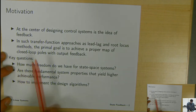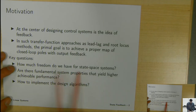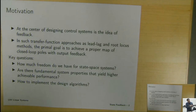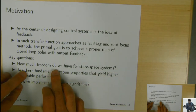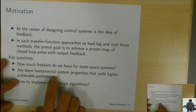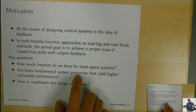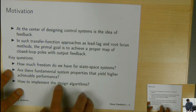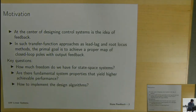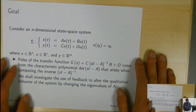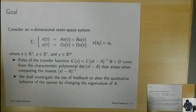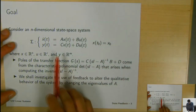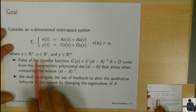For state-space systems, some key questions we want to ask are: how much freedom do we have? If we are given a choice of different controls to design, what kind of freedom do we have in terms of the closed-loop poles? Are there fundamental system properties that make a system more controllable or able to achieve higher performance? And how do we design and implement these control laws?